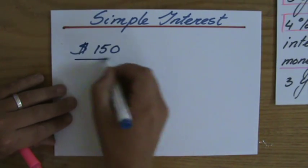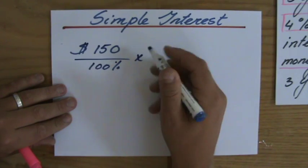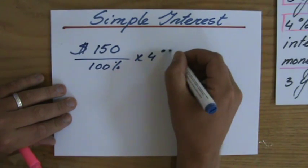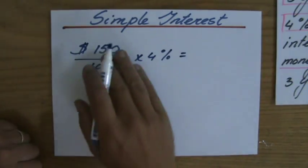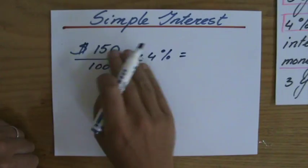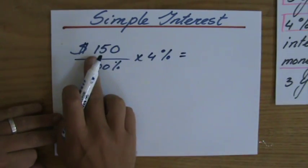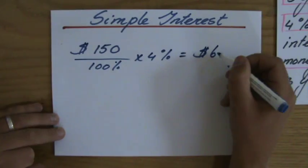I always find out what is 1%, so I divide by 100 and multiply by 4. Now I'm finding 4% of $150. $150 divided by 100 is $1.50, times 4 is $6.